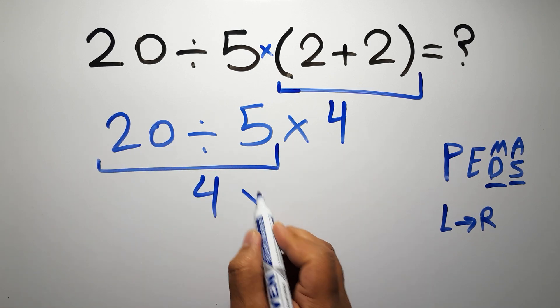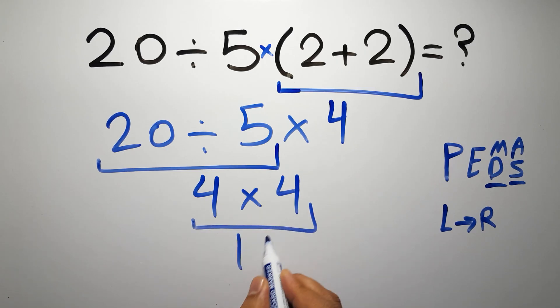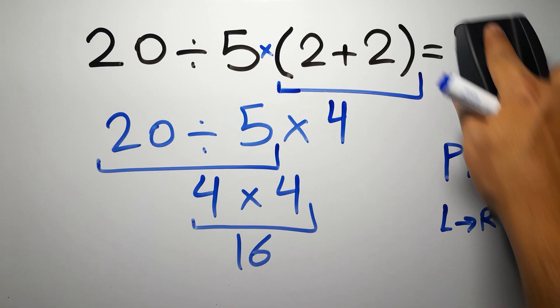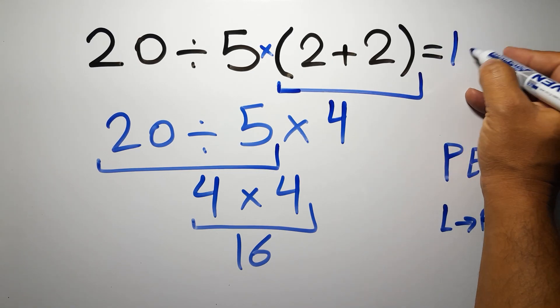So 4 times 4, which equals 16. And this is our final answer to this problem. The correct answer is 16.